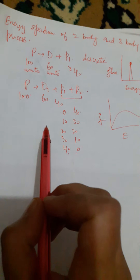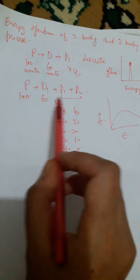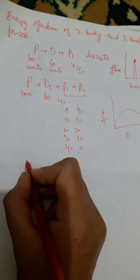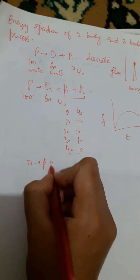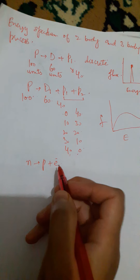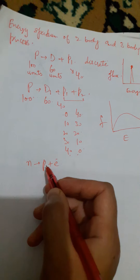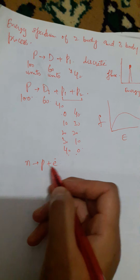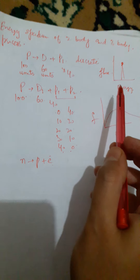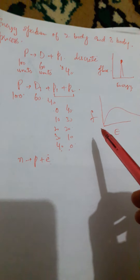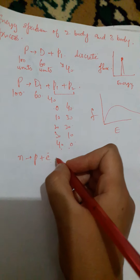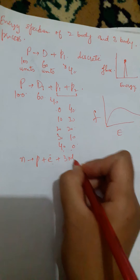So this is the difference between the energy spectrum of a two-body process and a three-body process. Now, beta decay, which is largely written as neutron goes to proton plus an electron. Normally we conceive beta decay like this — that it is a process in which neutron goes to proton and gives an electron. If it were a two-body decay, then the energy spectrum should have been discrete. But it is not discrete; it is continuous, which hints that there is a third particle which is emitted.